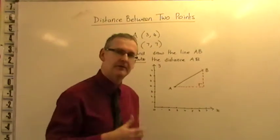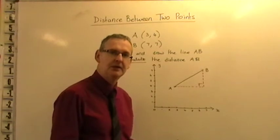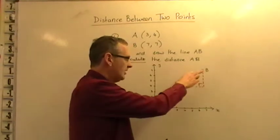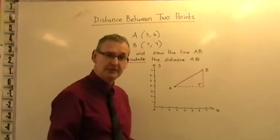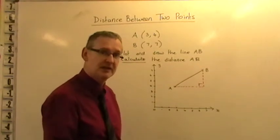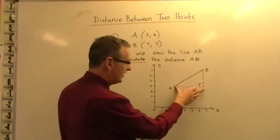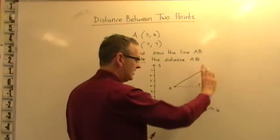So I construct the right-angled triangle like so. Now, if you remember, right-angled triangles, we can use Pythagoras' theorem to find a missing side length. So I'm going to use Pythagoras' theorem to find the length of AB. To be able to find AB, I need to know the length of the other two sides. So I need to know the length of that, I need to know the length of that.